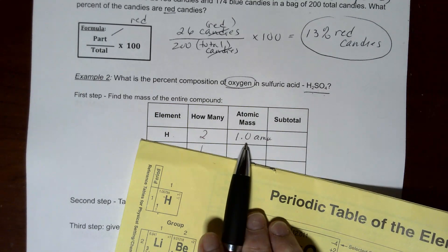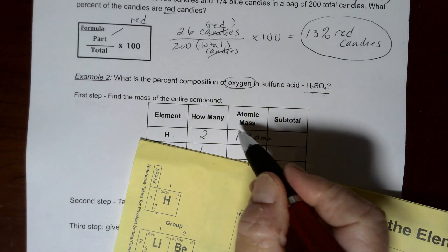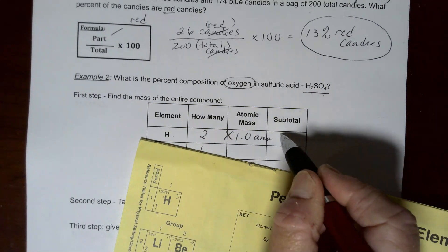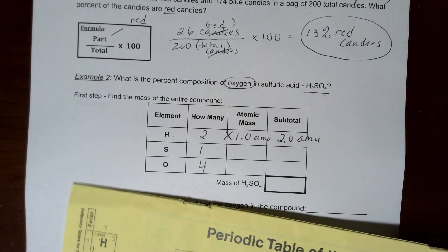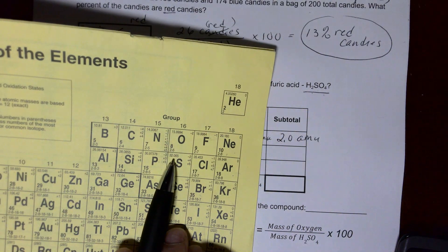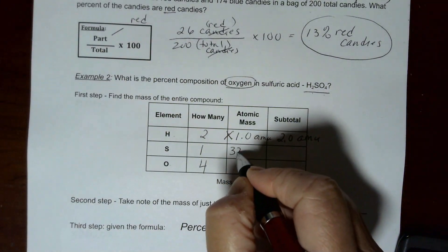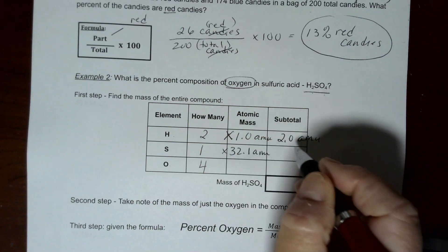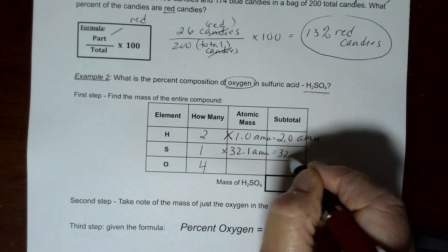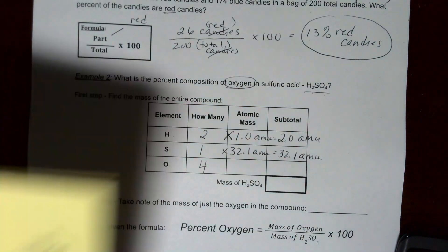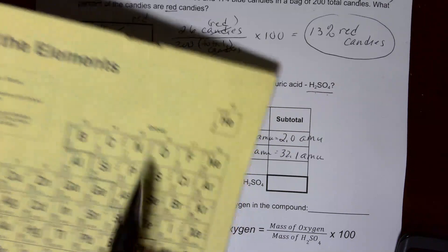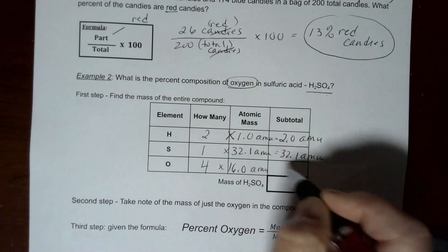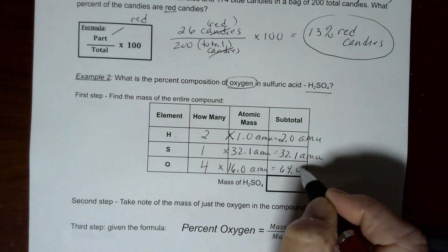Even if the tenth is a zero, we still express it to show that we rounded to the nearest tenth. Since we have two hydrogens, two times 1.0 gives a subtotal of 2.0 amu. We have one sulfur, and sulfur's mass to the nearest tenth is 32.1 amu, giving a subtotal of 32.1 amu. Each oxygen is 15.9994, which rounds to 16.0 amu, and 16.0 times 4 is 64.0 amu.